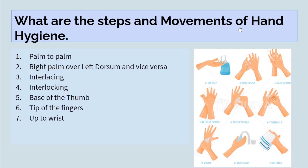What are the steps and movements of hand washing? There are 7 steps: palm to palm; right palm over left dorsum and left palm over right dorsum; interlacing between the fingers; interlocking the knuckles; base of the thumb; tip of the fingers — rotate in clockwise and anti-clockwise directions; and the seventh step is up to the wrist. Then rinse hands under running water and let dry with a towel or air dry.